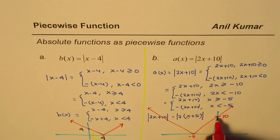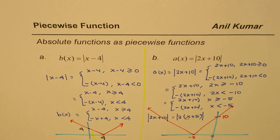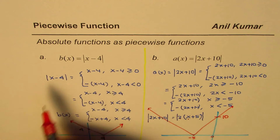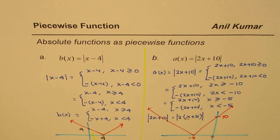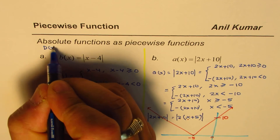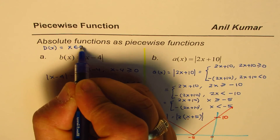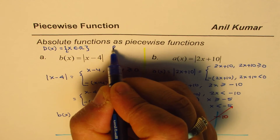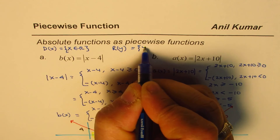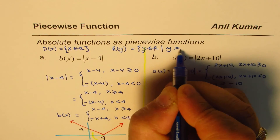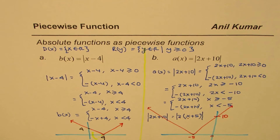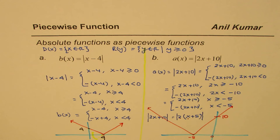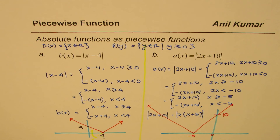For both functions, the domain and range are the same. The domain is x belongs to all real numbers. The range is y belongs to real numbers where y is greater than or equal to 0, since absolute functions always produce non-negative outputs.